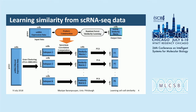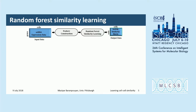The final feature matrix is constructed by juxtaposing the extracted features from each gene cluster. This extracted feature matrix is then passed to the second phase: random forest similarity learning.